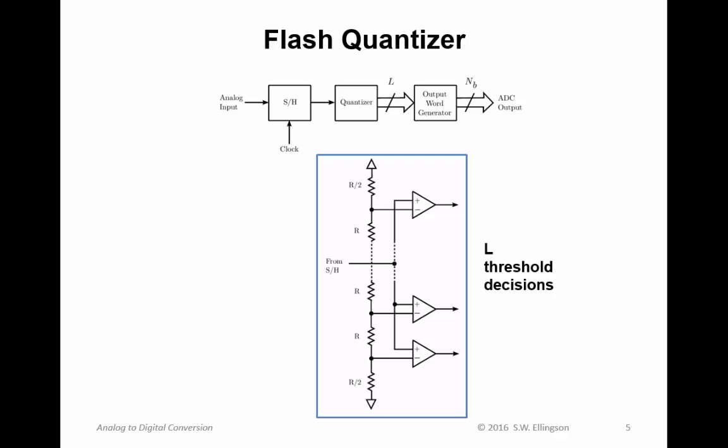Now the quantizer. One kind is known as a flash quantizer and it looks like this in this blue box here. The idea is we have some DC level up here, some relatively negative DC level down here, and then a string of resistors. All the resistors have the same value except maybe at the ends. We have voltages determined by voltage division. Then we take the input from the sample and hold and for each node we compare it to the input. If the input is greater than this node value it's positive, if not it's negative. We'll have a bunch of negative values then positive values, and where it goes from positive to negative is our best guess at the input level.